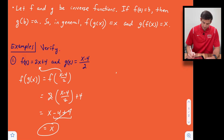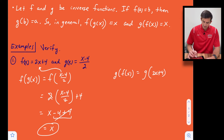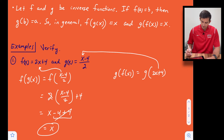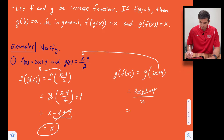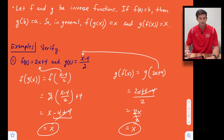Now on the right side, let's do g(f(x)). So we're going to find g of (2x + 4). We take 2x + 4 and plug it in for x, giving us (2x + 4 − 4) / 2. Plus 4 and minus 4 cancel, leaving 2x / 2, and 2x / 2 leaves us with just x. So we've verified that those two functions are in fact inverses.